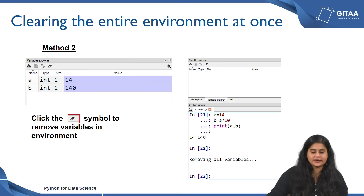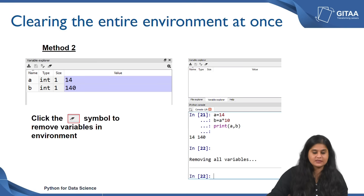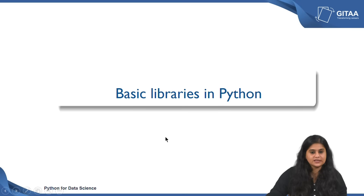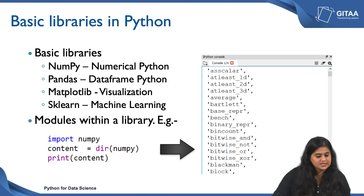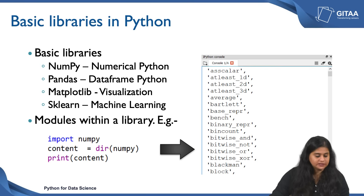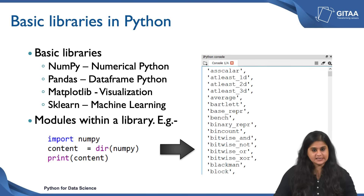Till now we have seen how to execute an entire file or few lines of code, how to comment the code, and how to clear the console and the environment. Now let us take a look at some of the basic libraries in Python. There are four major libraries that get installed at the time of installation of Python: numpy which stands for Numerical Python, pandas which stands for paneled data frames, matplotlib which stands for visualization, and sklearn which is used for machine learning. These are four major libraries important to solve a data science problem.